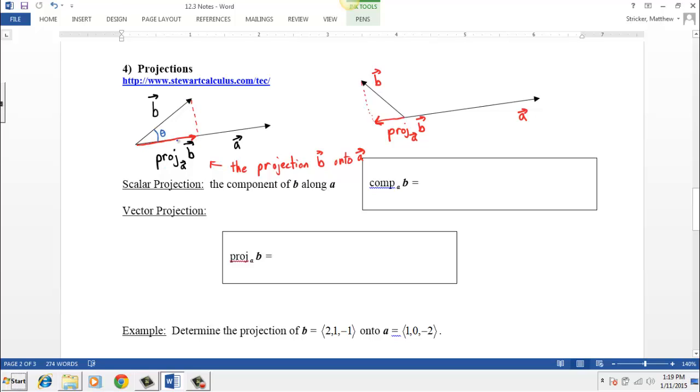Since the projection of B onto A is the side, notice that there's a little right triangle here. Since this is the side of the right triangle that is adjacent to the angle theta, we know that that component, or that side of the right triangle, is the hypotenuse, which is the magnitude of vector B, times the cosine, because it's the adjacent side, times the cosine of theta, which is the angle between them.